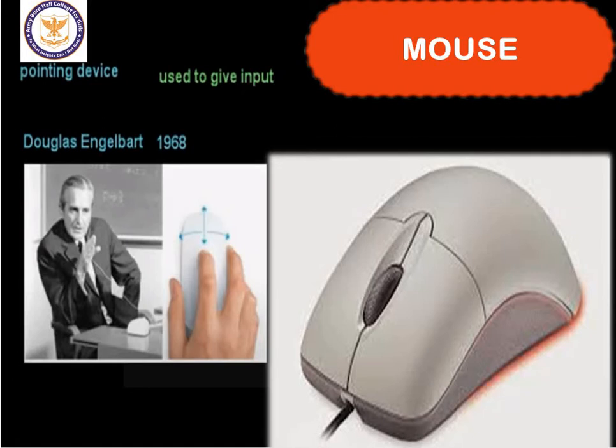An icon on the screen is selected by clicking the left button of the mouse, and a program or folder is opened by double-clicking the left button. A standard mouse has two buttons — for left click and right click — and a scroll wheel in the center to quickly move the screen up and down. A computer mouse can have anywhere from one to several more buttons for a wide variety of functions. The mouse sometimes has a ball on the bottom, sometimes on top, and sometimes has a laser light or light emitting diodes inside it.